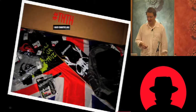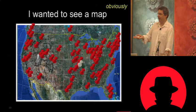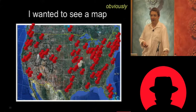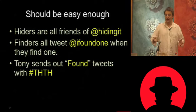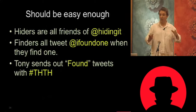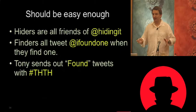I wanted to see a map of where all these packages went, who hid them, and who found them. I thought it would be fairly straightforward on a nerdy Sunday afternoon. All the people who hid decks were friends on Twitter with the @hidingit account. The finders were meant to tweet 'I found one' when they found one, and Tony sends out 'found [wherever] by [whoever]' with the hashtag THTH.